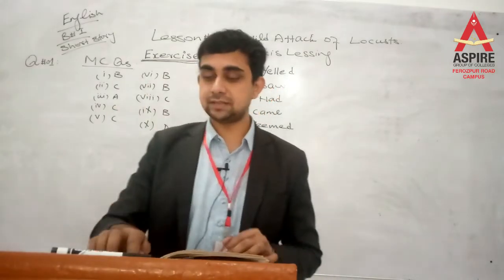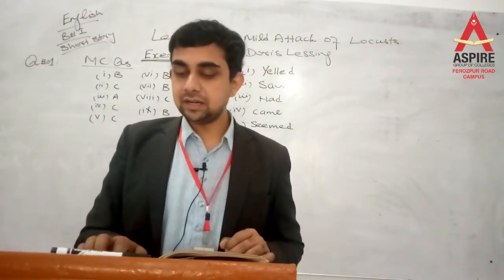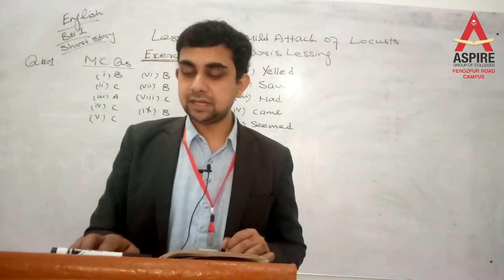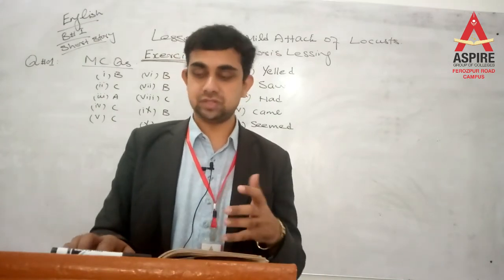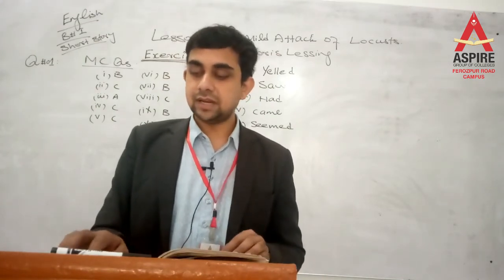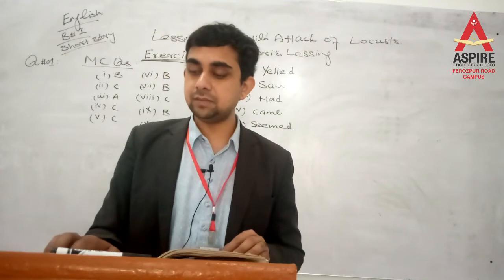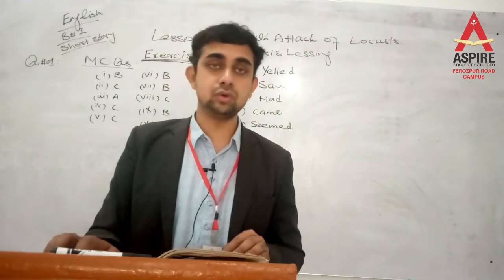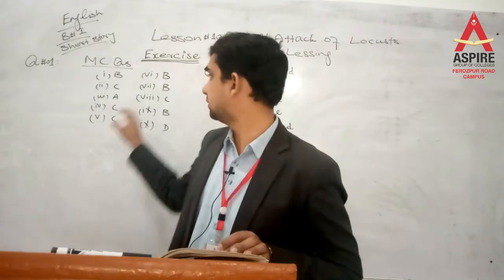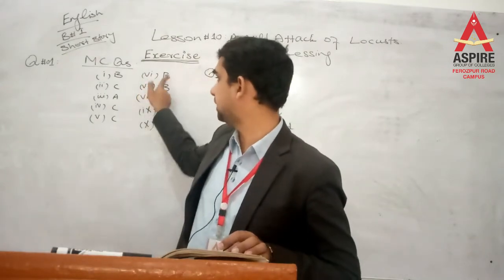Number 6: Why did the people beat the tin cans? The correct option is B: To keep the insects away — کیڑوں کو دور رکھنے کے لیے. So number 6's answer is B.